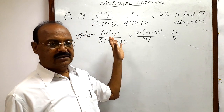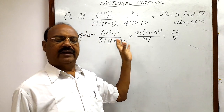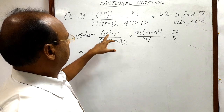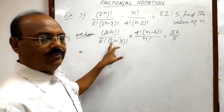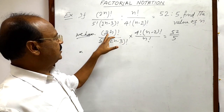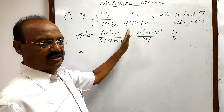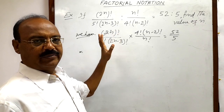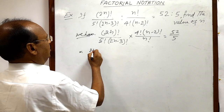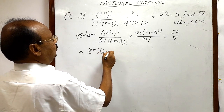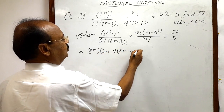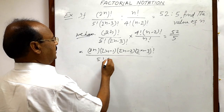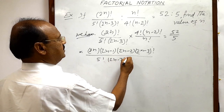Now let us expand the factorial notations wherever required. We have (2n)! in the numerator and (2n-3)! in the denominator. We will expand (2n)! down to (2n-3)! so that (2n-3)! cancels from numerator and denominator. The numerator becomes 2n times (2n-1) times (2n-2) times (2n-3)!, divided by 5! times (2n-3)!.